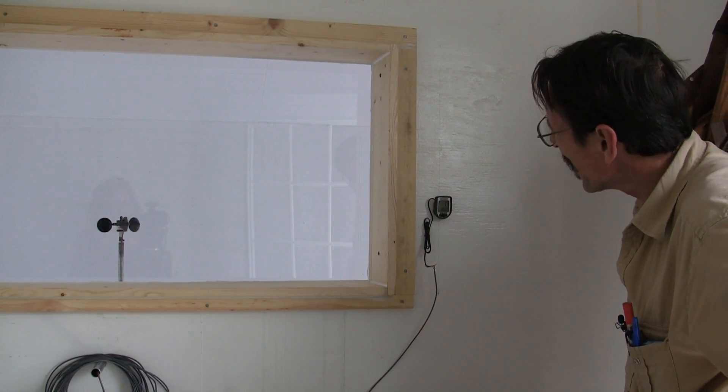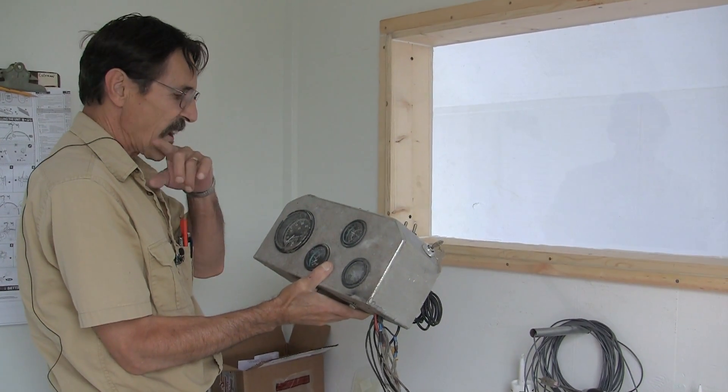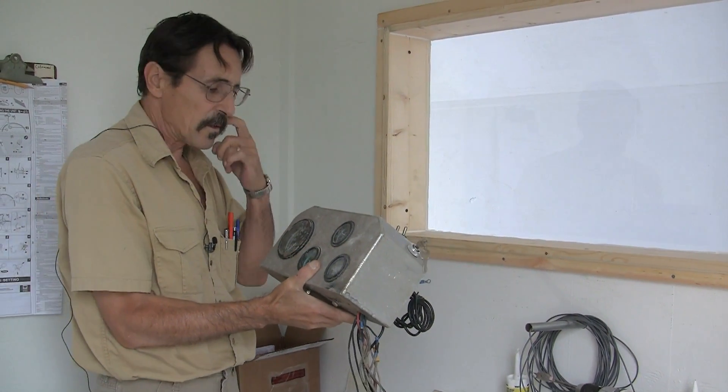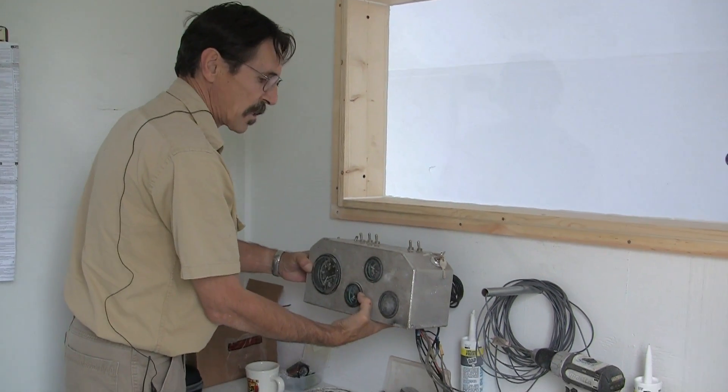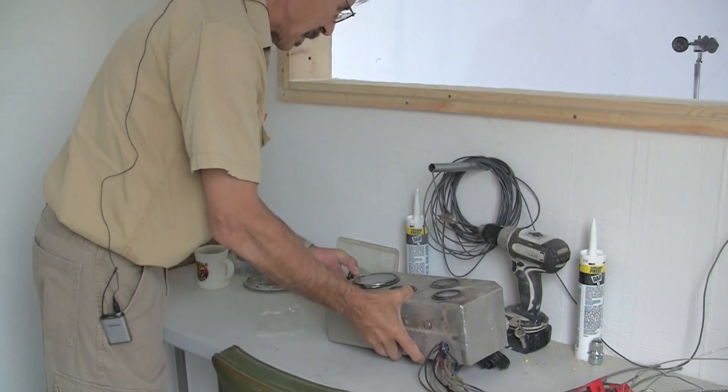So this is the control panel for the engine outside, the swamp boat motor. We'll be mounting this panel in here on the wall, something like this, so I'll be getting that up next.